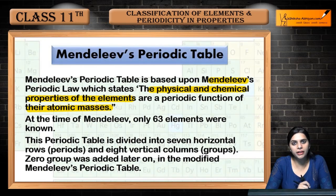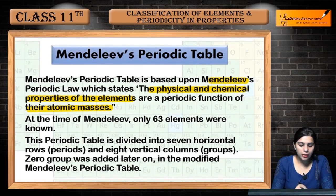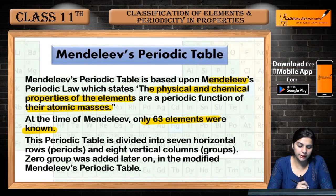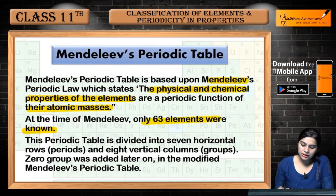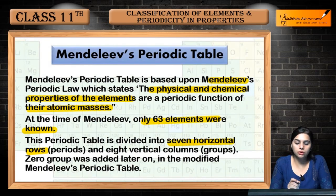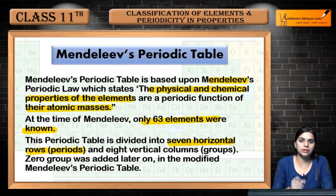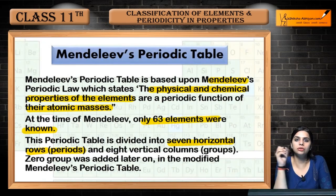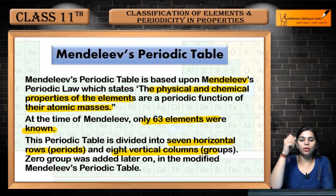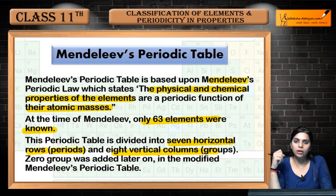At the time of Mendeleev, only 63 elements were known when he made the periodic table. The periodic table is divided into seven horizontal rows called periods, running east to west, and eight vertical columns running north to south, which are called groups.